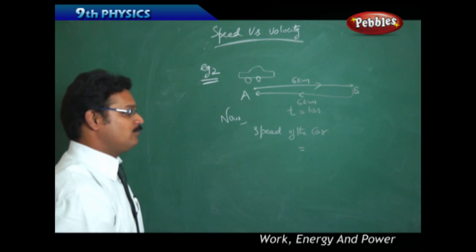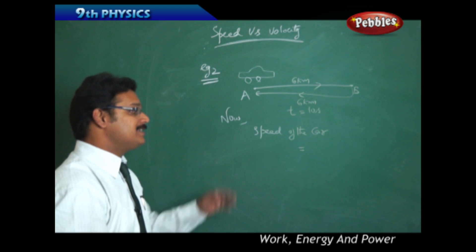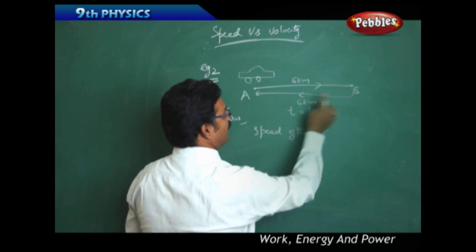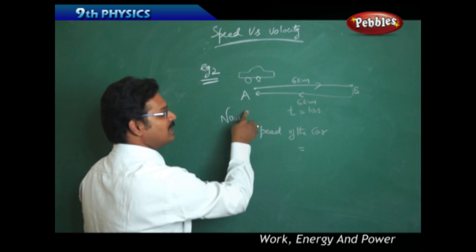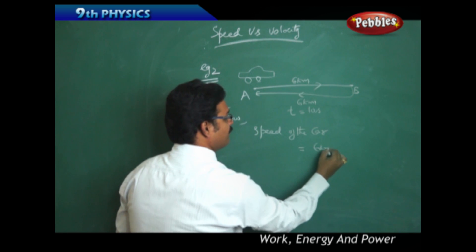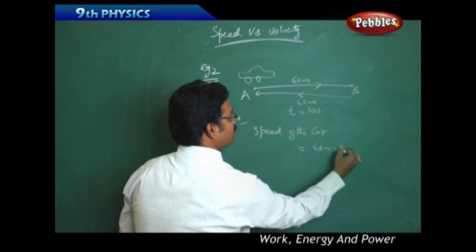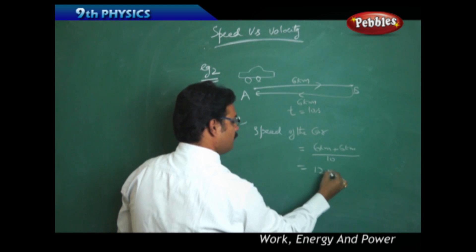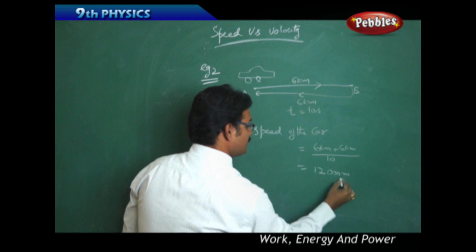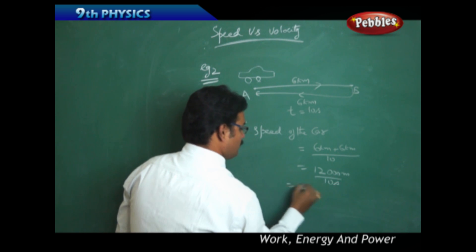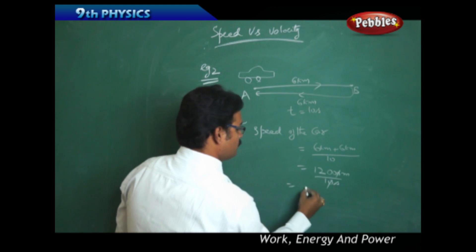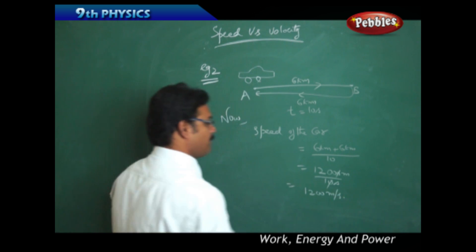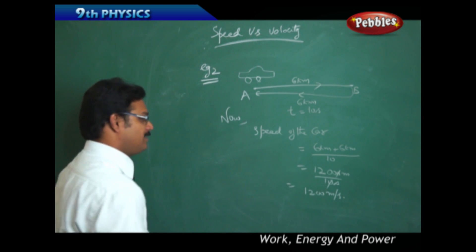Speed of the car equals total distance by time. The total distance is A to B plus B to A, which is 6 km plus 6 km equals 12 km. Converting: 12,000 meters divided by 10 seconds equals 1200 meters per second. That is the speed of the car.